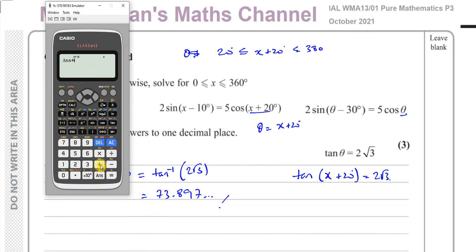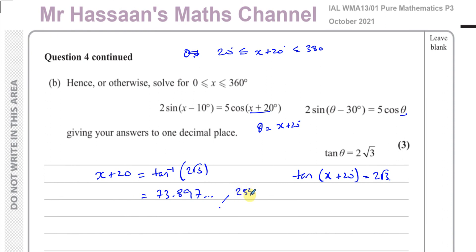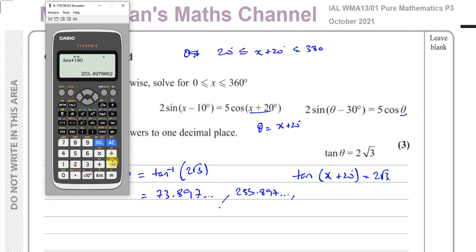So that's 73.897... and then in the range between 20 and 380, that's in our range, it's okay. And we can think about another angle if we add 180 to this because it's tangent.